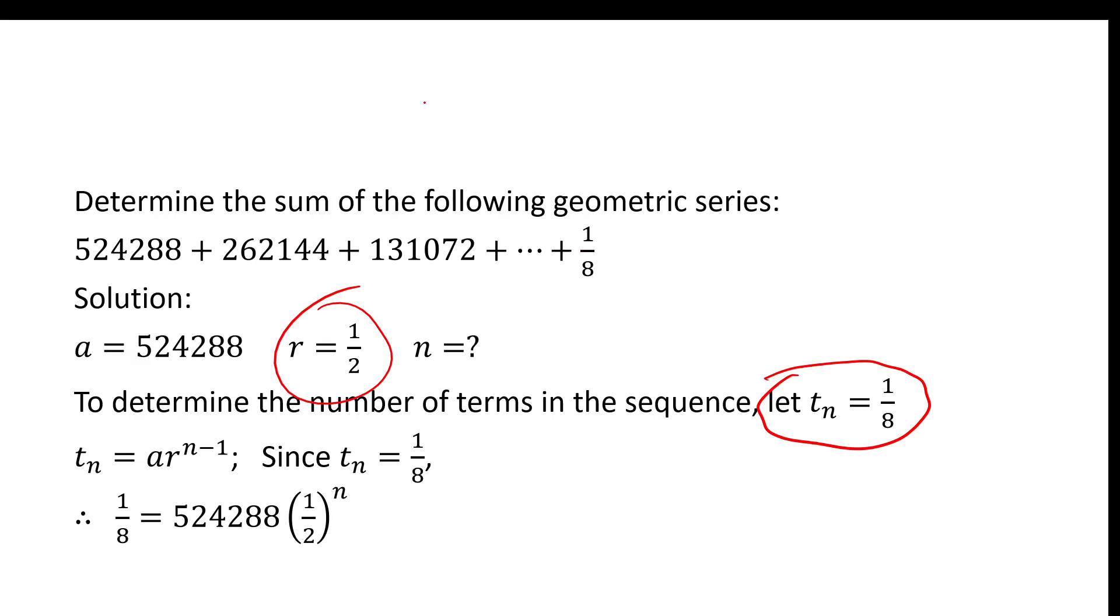So what we're going to do now, recall that the Nth term of a geometric sequence is given by this formula. It works for geometric series as well. The Nth term of a geometric series is also equal to A R to the N minus 1. And that's what's shown here. And we know that T_N is 1 eighth, and we know that A is this number here, and we know that R is a half.